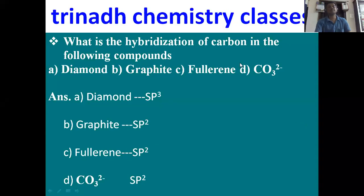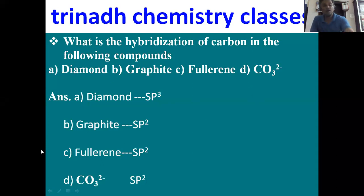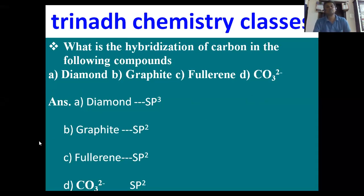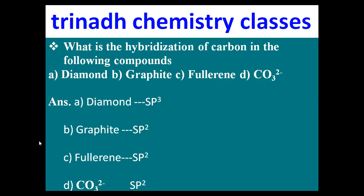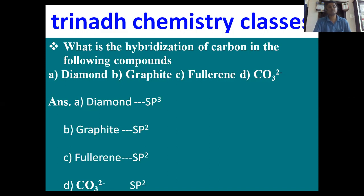Next: what is the hybridization of carbon in the following compounds — diamond, graphite, fullerene, and carbonate? In diamond, carbon has sp3 hybridization. In graphite, fullerene, and carbonate, carbon has sp2 hybridization.